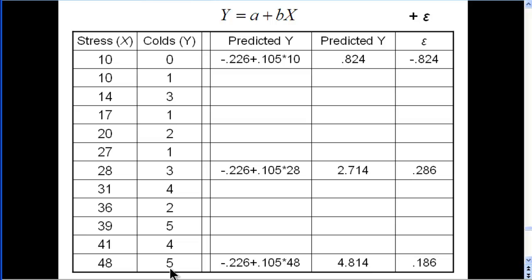When in reality they had 5, and we get a residual term of 0.816, because the difference between 5 and 4.84.